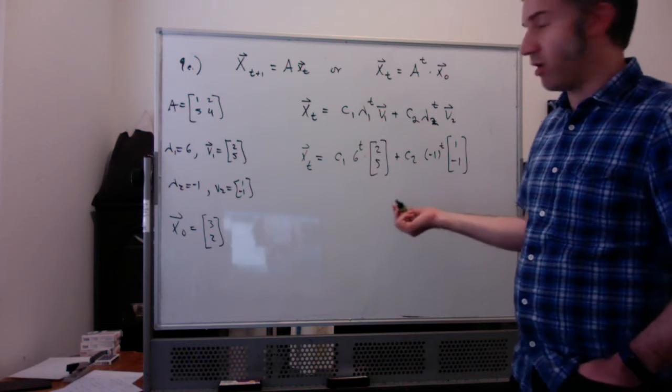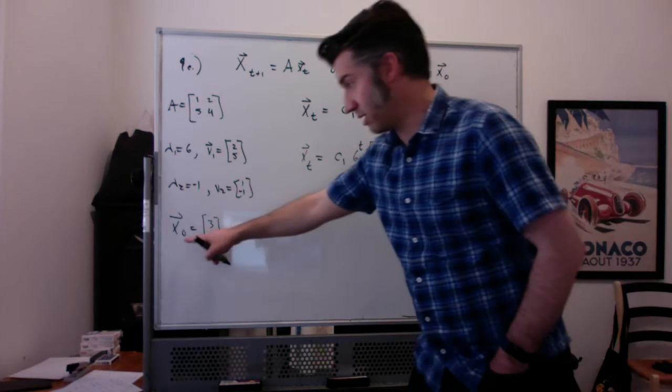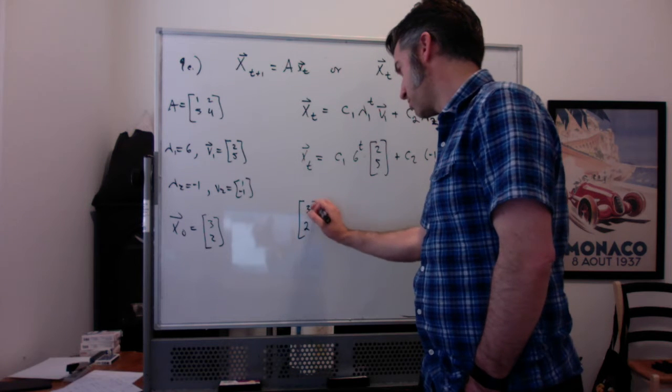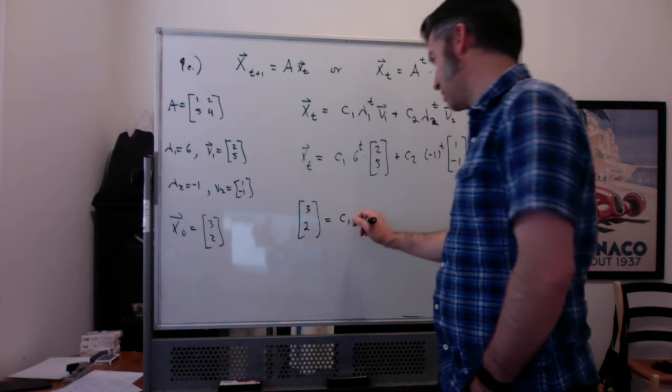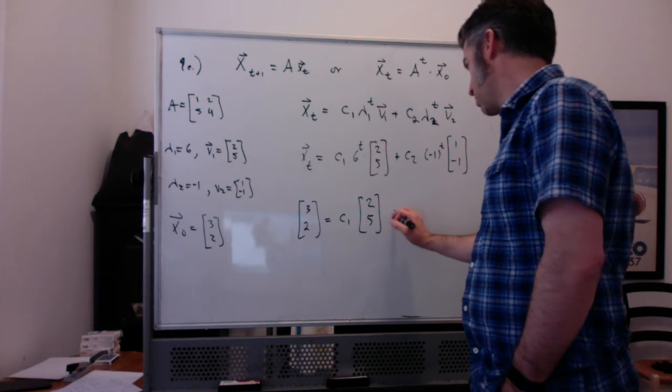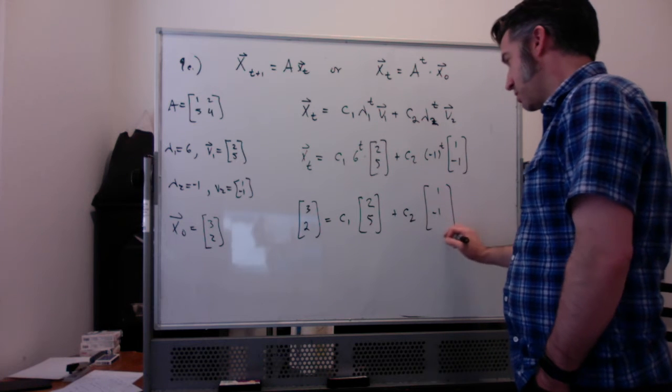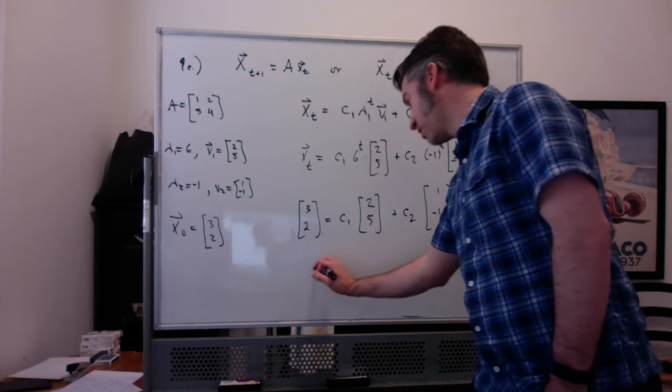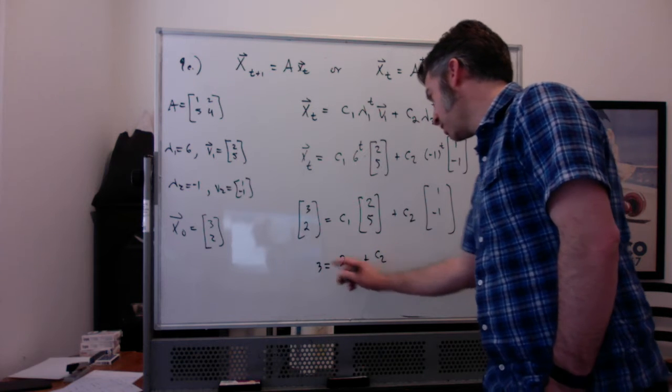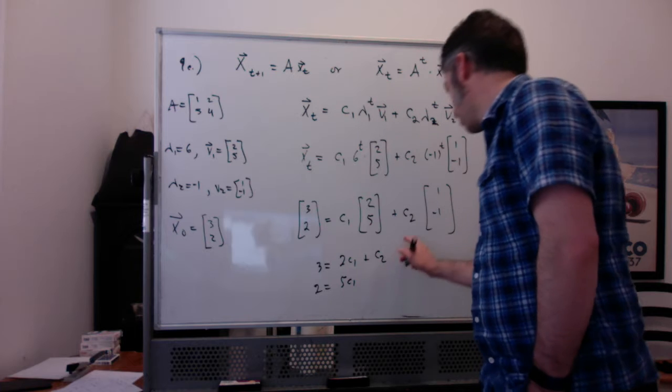Our only job really is to figure out what c1 and c2 is. So we can start with plugging in t equal to 0, so x0 is 3, 2, equal to c1 times 6 to the 0 is 1, plus c2 times negative 1 to the 0 is also 1. We have 3 equal to 2c1 plus c2, and 2 equal to 5c1 minus c2.